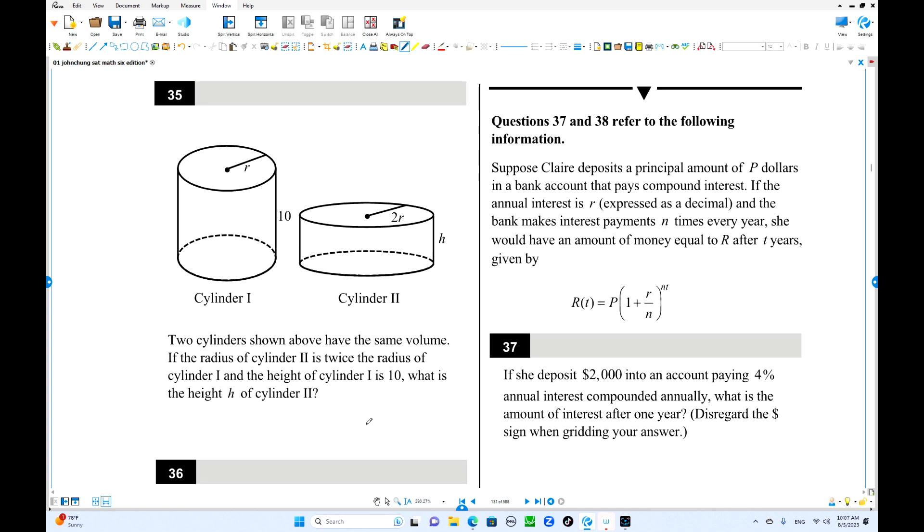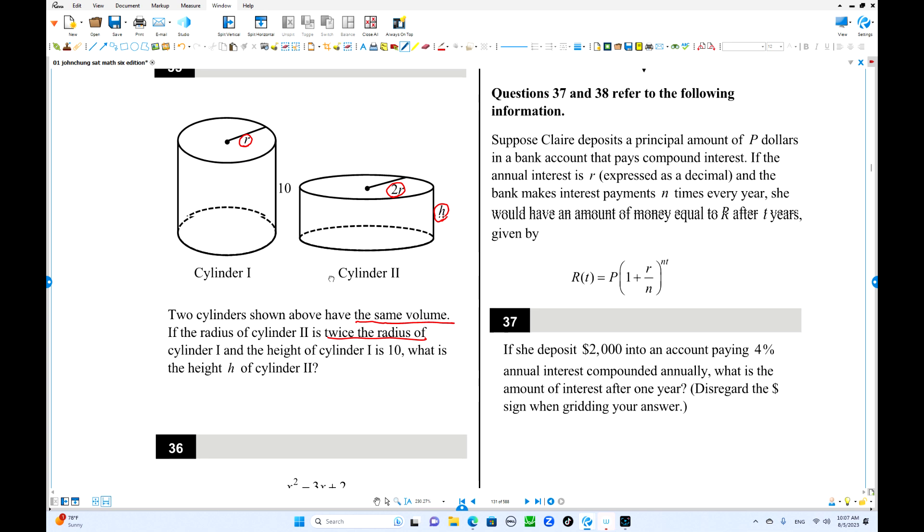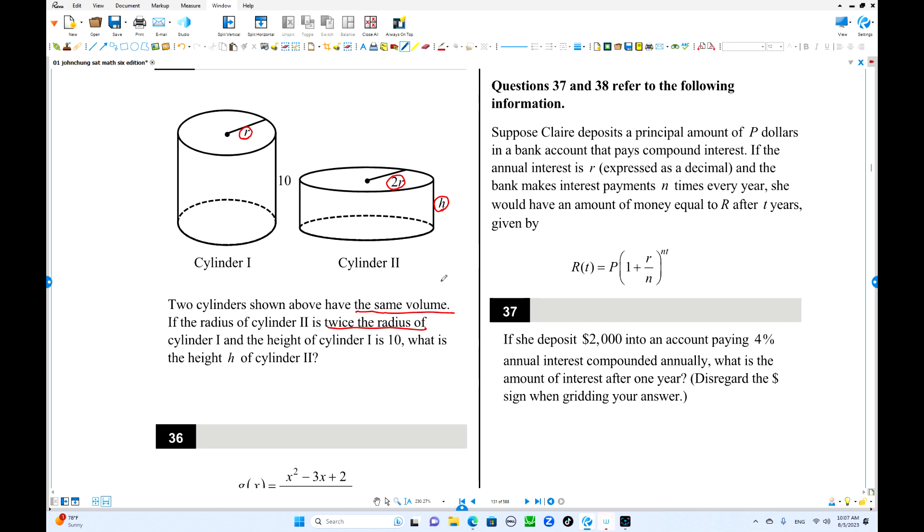Number 35 here. We have two cylinders. They're going to have the same volume. The radius of the second one is twice this radius. This is r, so twice is 2r. But this is the height, an unknown number. You're going to find this height so that the volumes of these two figures are equal.